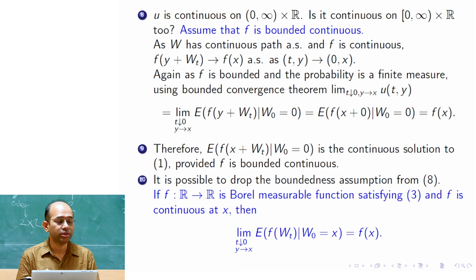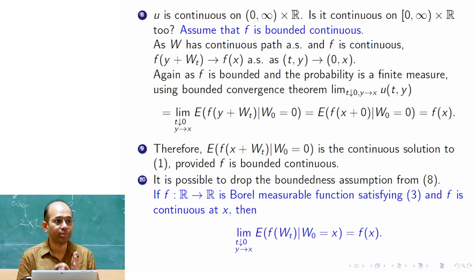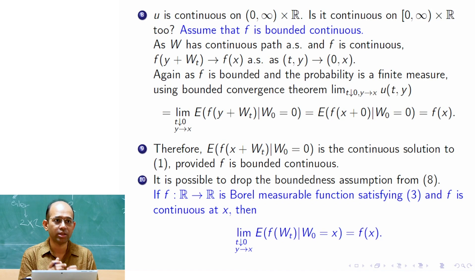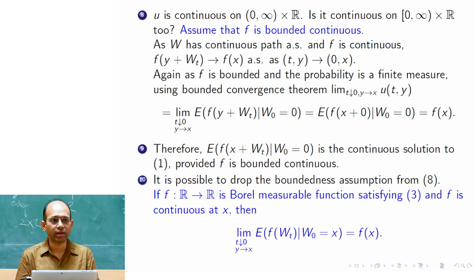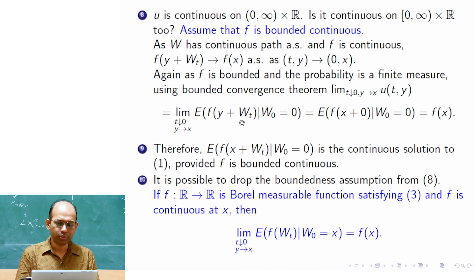Even if f is not bounded but has the growth property, when finding the expectation we multiply by the probability density function. That product — the pdf and f together — can satisfy some L¹-type bound, and then one can manipulate to allow the limit to pass inside. Let us see that proof.